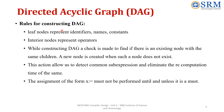Always in the DAG, the leaf nodes can be either identifiers, names, or constants. The interior nodes represent the operators. While constructing the DAG, we have to check if there is an existing node with the same children. A new node is created only when no such node exists. This allows us to detect common sub-expressions and eliminate the pre-computation time. The last rule is that we will not consider assignment statements like x equals while performing the construction of the DAG — it is not used unless mandatory.